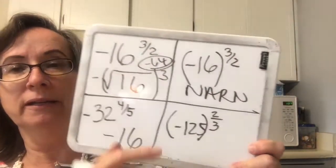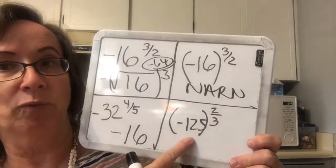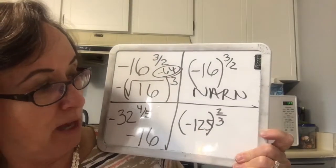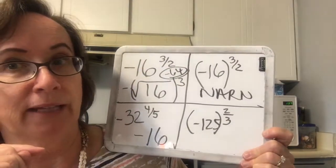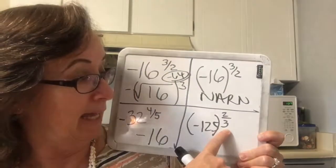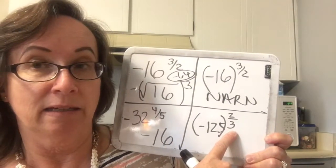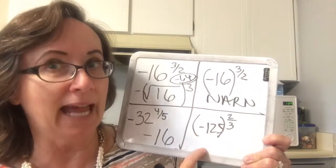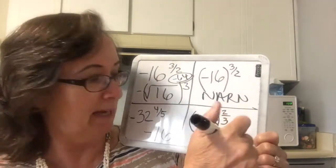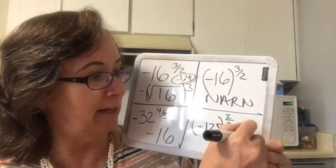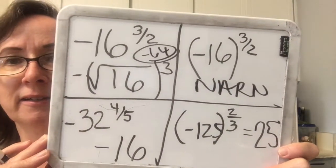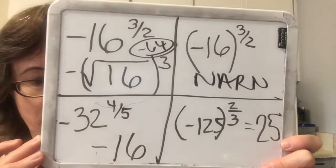The last one on this board is negative 125 raised to the 2/3 power. The cubic root of a negative is no problem — the denominator of the fraction is the root. The cubic root of negative 125 is negative 5, and then I square negative 5 to get positive 25, and that is the answer.